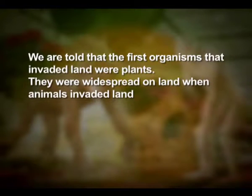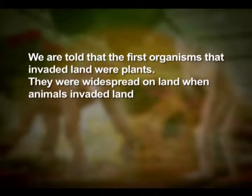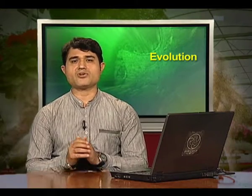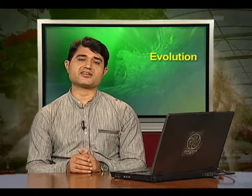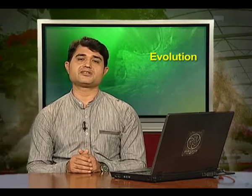The first organisms that invaded land were plants. They were widespread on land when animals invaded land. Fish with stout and strong fins could move on land and go back to water. This was about 350 million years ago.